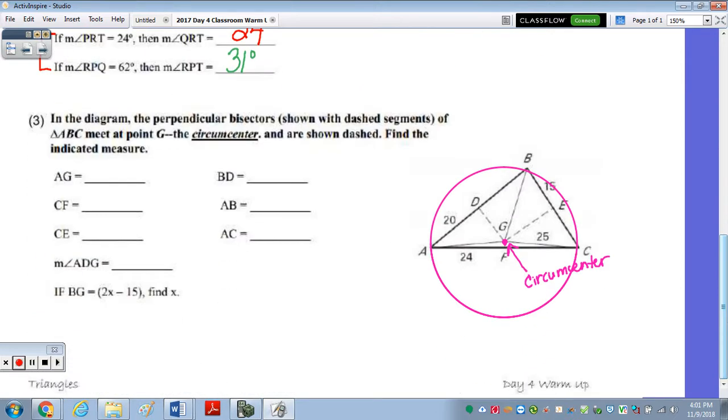Last, this is in the diagram, the perpendicular bisectors. They are shown with the dash segments of triangle ABC meet at point G, which is the circumcenter. And remember, the circle here is circumscribed about the triangle. So it's equidistant from the vertices. So this segment AG is equal to, or congruent to BG, it's also congruent to GC. So this is 25, BG is also 25, and AG is also 25.